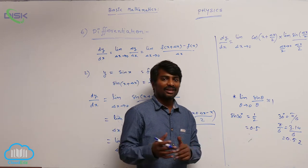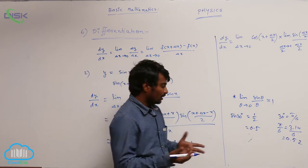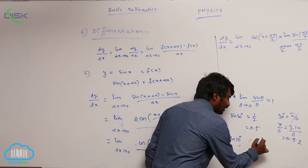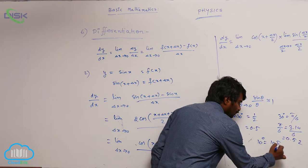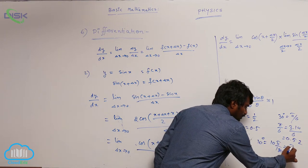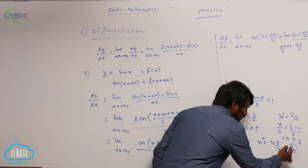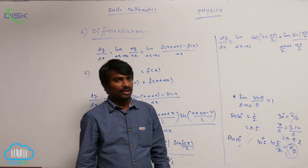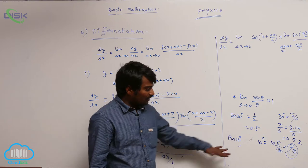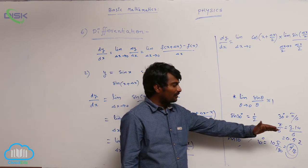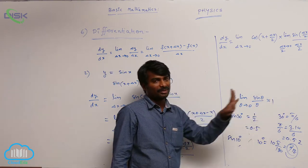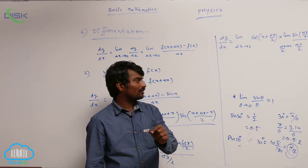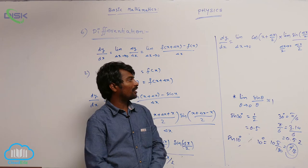That means, instead of calculating sin 5 degrees, just convert 5 degrees into radians and calculate that value — it is almost the same. Instead of calculating sin 10 degrees, better to calculate 10 degrees in radians: 10 degrees means 10 into pi by 180, that means pi by 18. Whatever be the value of pi by 18, you will be getting sin 10 degrees — the same. So instead of calculating sin theta, you can calculate theta separately, but that theta must be in radians. It is more correct for very small values of theta.